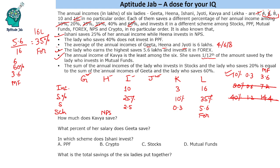The next clue states: the sum of annual incomes of the lady who invests in stocks and the lady who saves 20% equals the sum of incomes of Gita and the lady who saves 60%. The use of 'and' confirms these are different people, so Gita does not save 60%. Therefore, Jyoti is the lady who earns 6 lakhs, saves 60%, and invests in mutual funds.